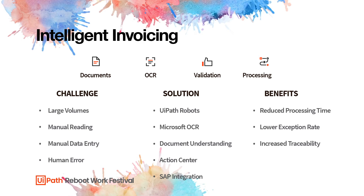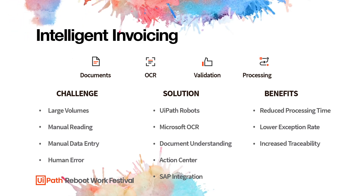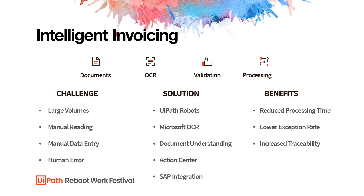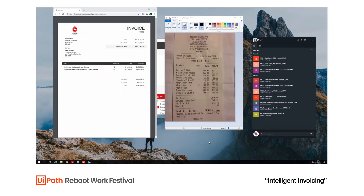Some of the benefits that come with this type of process: we obviously have reduced processing time. Robots act much faster than humans, and because robots always follow the steps laid out to them in the workflows, we have a lower exception rate and very high accuracy. And because robots always log the actions that they go through, we have very high traceability.